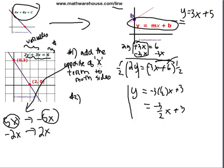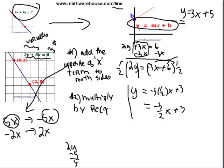So step 1 is add the opposite of the x term to both sides. Step 2: a lot of people make a mistake with 2y — they say, I've got 2y, let me subtract a y. But if you subtract a y from the left, you'd also have to subtract a y from the right, and we don't want that. We want one y on the left all by itself. So for step 2, always multiply by the reciprocal of the y coefficient.